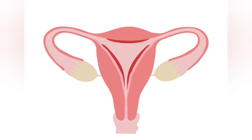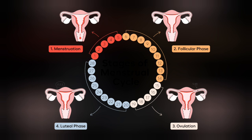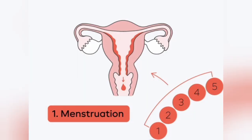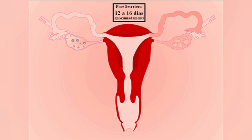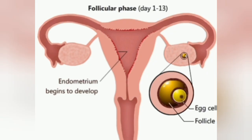There are four steps of the menstruation cycle: menstrual phase, follicular phase, ovulatory phase, and secretory phase. The first is the menstrual phase, which typically lasts from one to five days. This is when the lining of the uterus sheds through the vagina if pregnancy has not occurred.